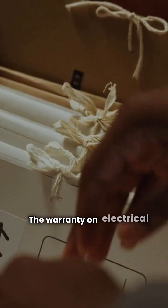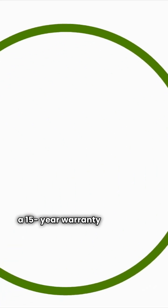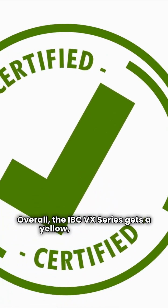The warranty on electrical parts is five years with a 15 year warranty on the heat exchanger. Overall, the IBC VX series gets a yellow three star rating from me. A good solid option for the modern home.